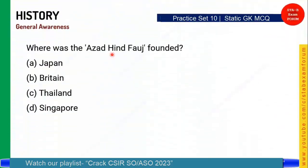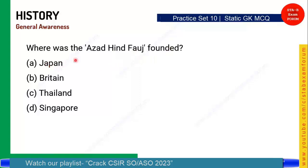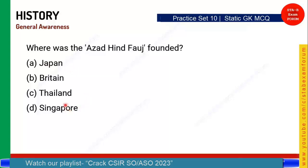Where was the Azad Hind Fauj formed? Japan is not the correct answer — Japan helped, but the Azad Hind Fauj was formed in Singapore. So Option D, Singapore, is the correct answer. Singapore is the place where the Azad Hind Fauj was formed.